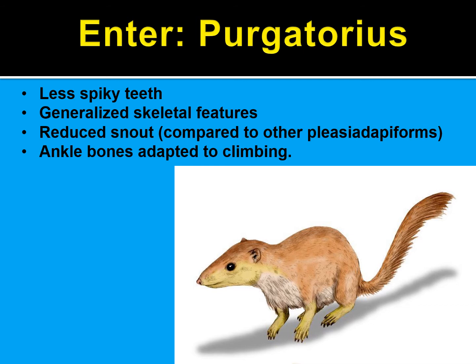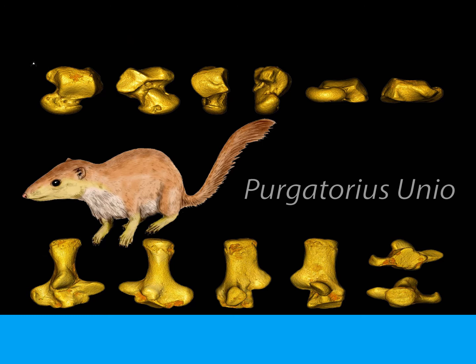We also have the genus Purgatorius, which had less spiky teeth, more generalized skeletal features, and a reduced snout compared to other Plesiadapiforms. Its ankle bones were particularly adapted for climbing. This is a very good candidate when we think about primate traits: a reduced snout moves in the direction of the flat faces of most primates today, more generalized skeletal features mean skeletal change can occur in fewer generations, and ankle bones adapted for climbing lend to an easy ability to switch to arboreal living.